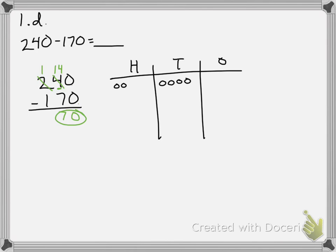Coming over to the chip model, I have nothing in my ones place so I put zero there. To take away seven from the tens, I unbundle a hundred — one, two, three, four, five, six, seven, eight, nine, ten. Then I take away seven of those: one, two, three, four, five, six, seven — leaving me with seven. Then I subtract the one in my hundreds place, and I end up with 70 again.